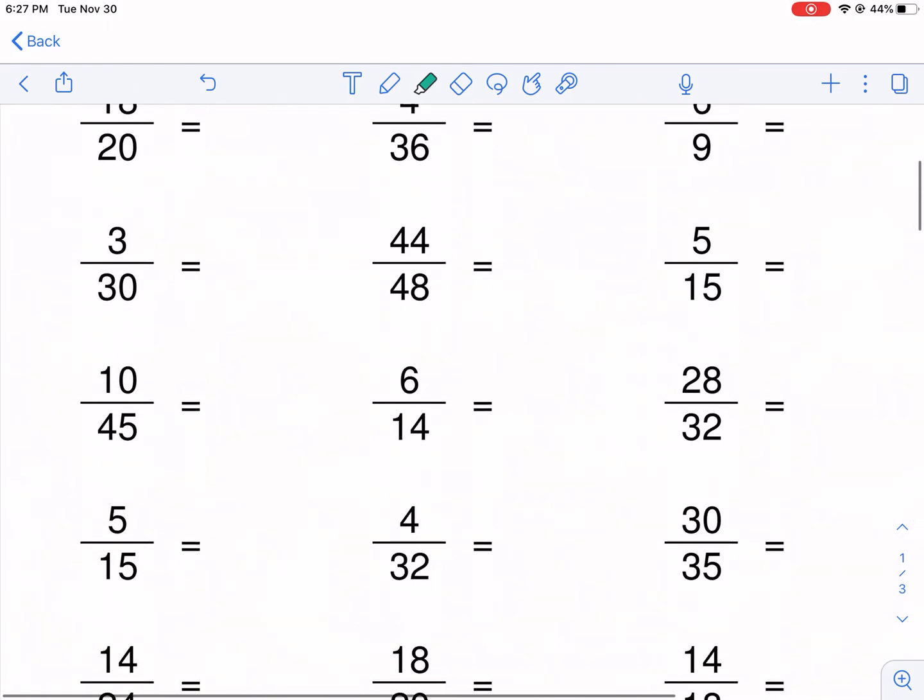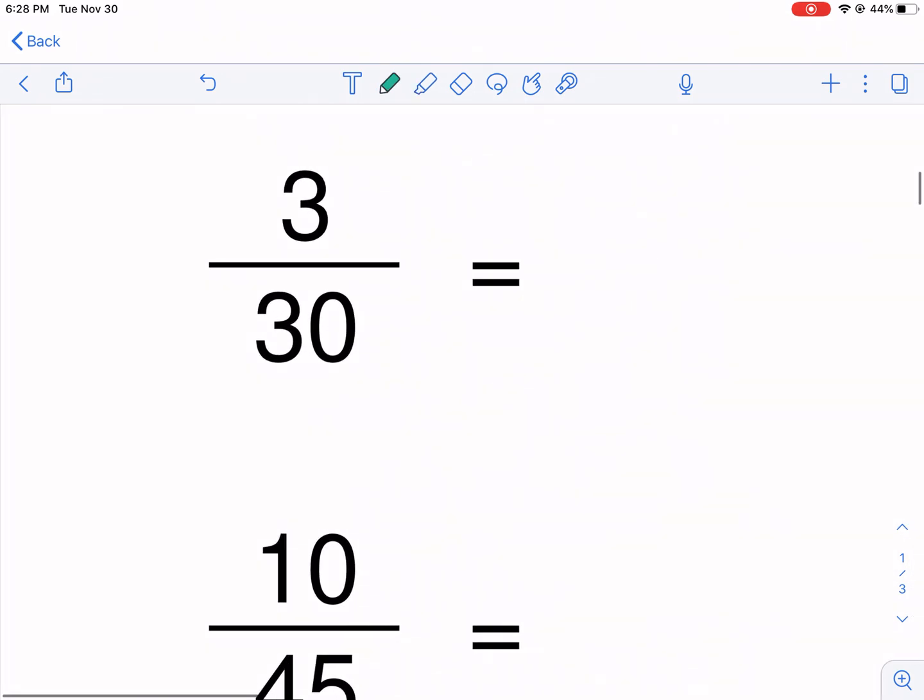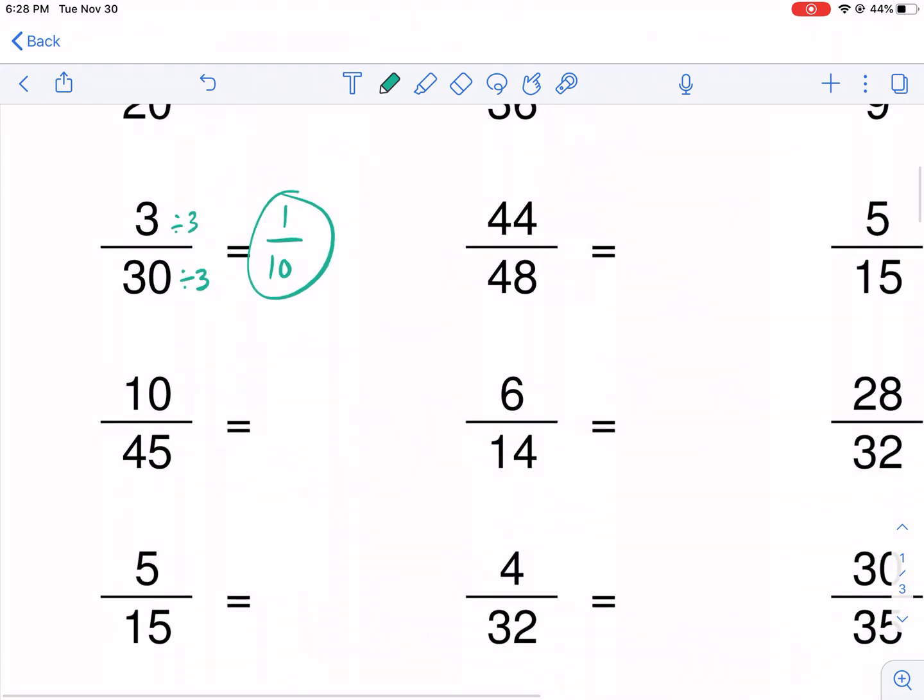So if I go over here, 3 over 30. This one's obvious. Usually when you have smaller numbers, a real small number on the top, try dividing it by that number to the top and the bottom first. So I have 3 divided by 3, that gives me 1, 3 divided by 3, that's 10, 1/10. Reduced.